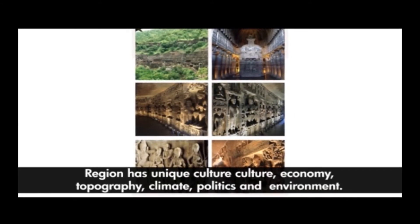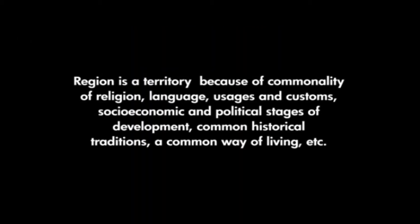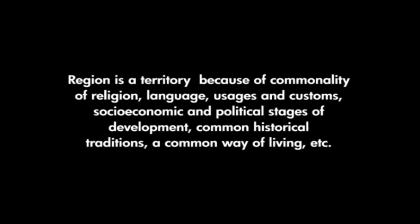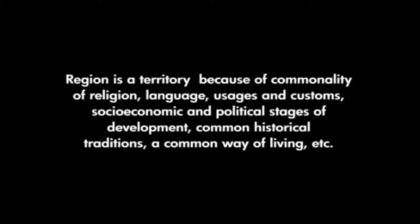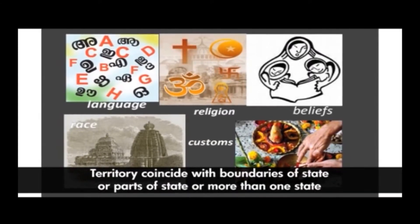Definition of region: A region is an area, especially part of a country or the world, having definable characteristics but not always fixed boundaries, with a unique culture, economy, topography, climate, politics, and environment. A region is a territory whose inhabitants have an emotional attachment to it because of commonality of religion, language, customs, socio-economic and political stages of development, common historical traditions, and a common way of living. This territory can coincide with the boundaries of a state, parts of a state, or even more than one state.